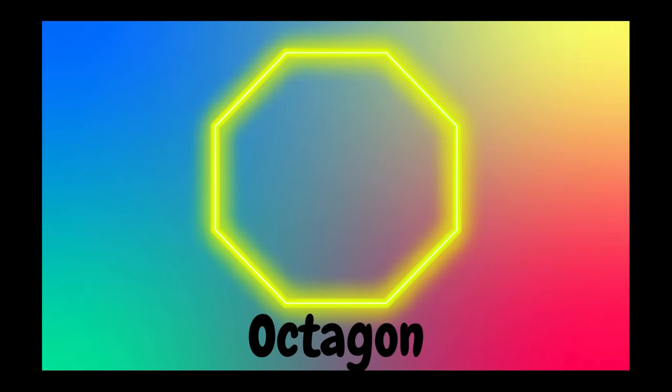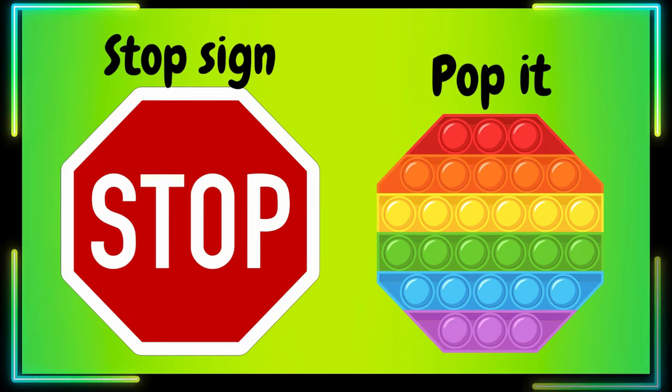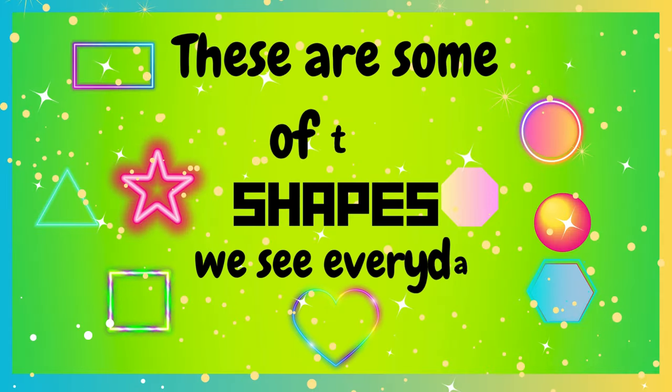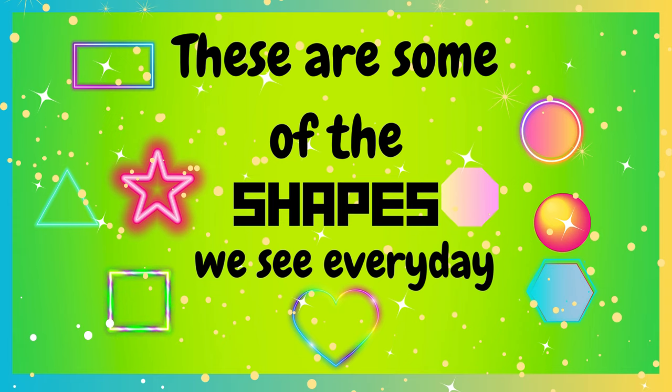This is an octagon. Can you say octagon? An octagon has eight points and eight equal sides. Let's look at some examples of an octagon. Here we have a stop sign — that's right, S-T-O-P spells stop. And we also have a puppet. Do you have this toy near you? These are some of the shapes that we see every day. Look out for them.